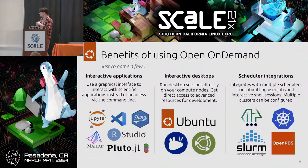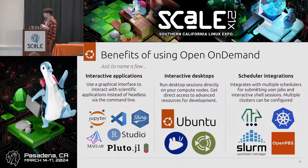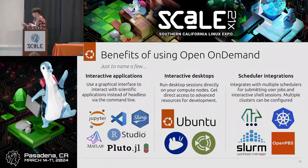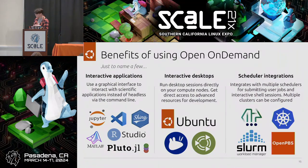The last benefit I'll mention is scheduler integration. Everybody kind of has their preferred scheduler. The logos here: first is LFS, a workload scheduler produced by IBM. Then there's Slurm — based on the drink from Futurama, though they prefer you call it the Slurm Workload Manager — which is a Simple Linux Utility Resource Manager. There's also OpenPBS, an open portable batch system similar to Slurm. And lastly, it integrates with Kubernetes, so you can run jobs on a Kubernetes cluster.